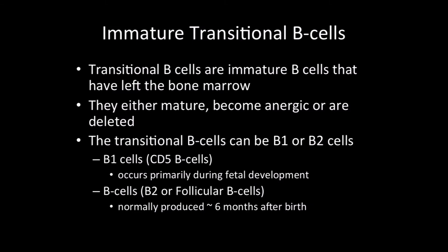Immature transitional B-cells are transitioning from the primary lymphoid organs to the secondary lymphoid organs. They've left the bone marrow - they've either matured, become anergic, or they're being killed or in the process of clonal deletion. They can be either B-1 or B-2 cells. B-2 are the normal ones, the most common ones we've referred to throughout this class. We'll talk about B-1 later.